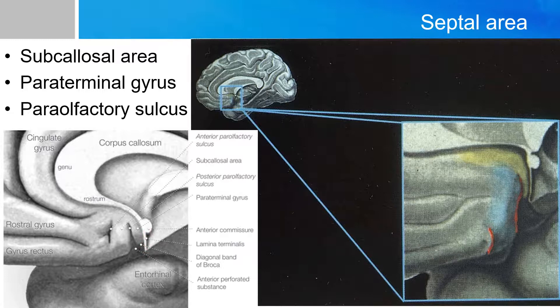The septal area consists of two gyri and two sulci, and they are all nearly vertically oriented. Marked in yellow is the paraterminal gyrus, and marked in aqua is the subcallosal area. The two sulci are called the anterior and posterior para-olfactory sulci, and you can find the labeling in this part of the picture.